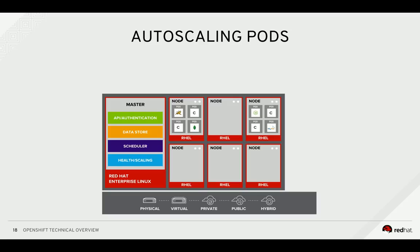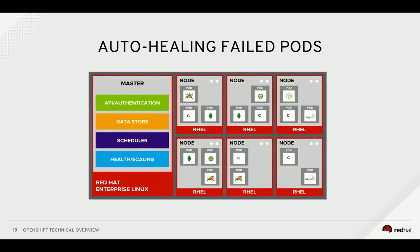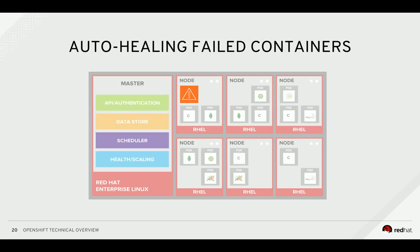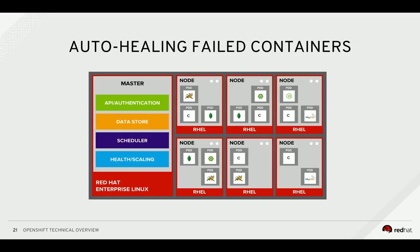The master is responsible for monitoring the number of pods and automatically scaling them as desired. Pods can be manually scaled by stating the desired number, or auto-scaled based on metrics collected from the pods, within the boundary of a configured minimum and maximum number of pods. The OpenShift master monitors application health via user-defined pod probes. Liveness and readiness probes determine if a pod is healthy and able to accept traffic. When the master sees a pod failing a probe — perhaps due to a container crash — it remediates failures automatically, managing traffic to healthy pods and handling pod restarts without any user intervention.